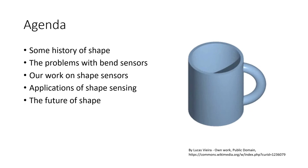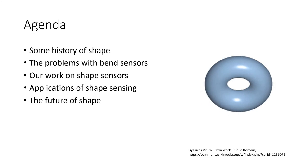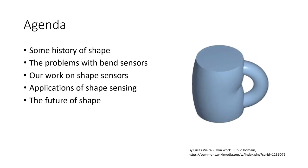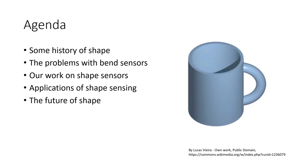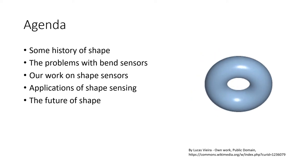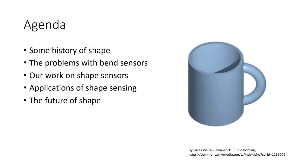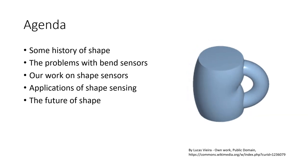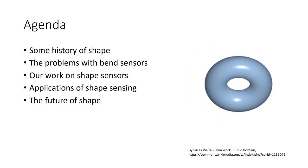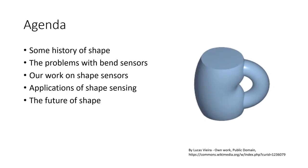Then we'll look at different types of shape sensors — bend sensors in particular — that we use to measure changing shape. Those have various issues that will motivate our own work. In particular, we'll be talking about SHARK sensors, explaining what they are, their properties, and why they're so interesting. Then we'll move on to applications of shape sensing, including some surprising ones, and finally talk about the future of shape itself.